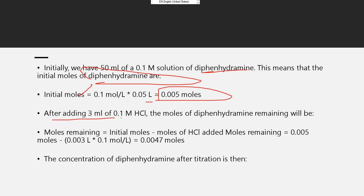After adding 3 ml of 0.1 molarity HCl, the moles of diphenhydramine remaining equal the initial moles minus the moles of HCl added: 0.005 moles minus the moles of HCl added.